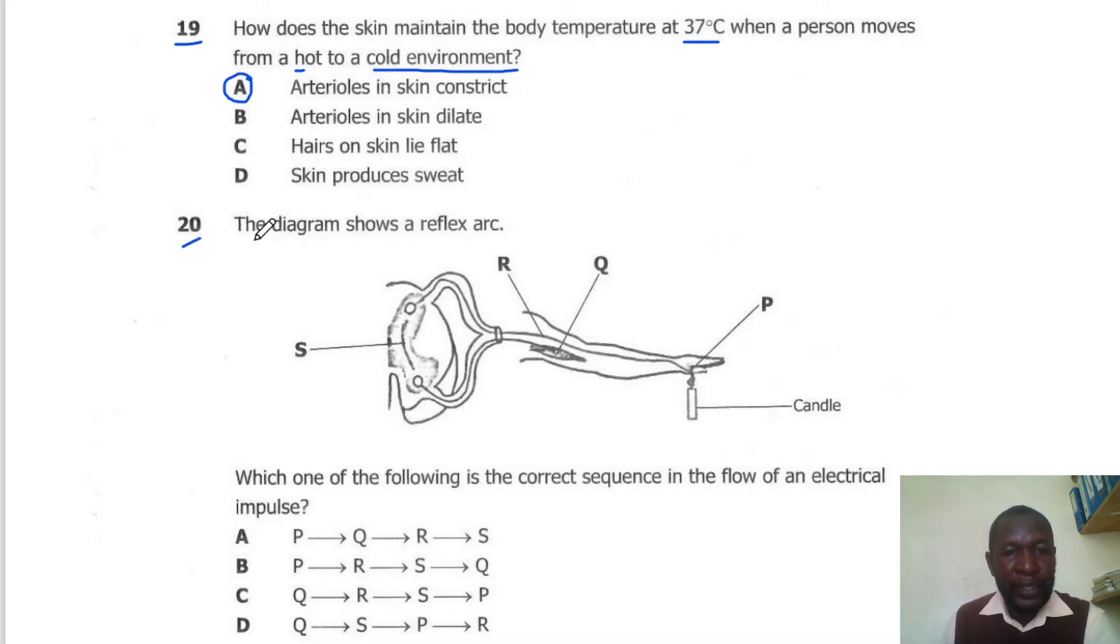Question 20. The diagram below shows a reflex arc. Which one of the following is the correct sequence in the flow of an electrical impulse? The electrical impulse will start from the receptor and then flow to the sensory neuron, then pass through the relay neuron, which will pass the information to the motor neuron, which reaches the effector, which is either a muscle or a gland. So the correct sequence here is P, R, S, Q. The correct answer is B.